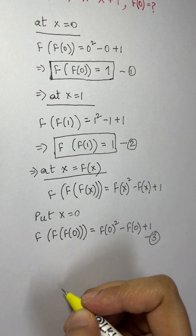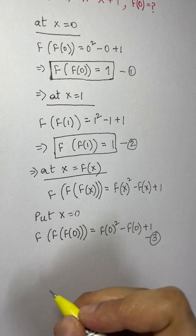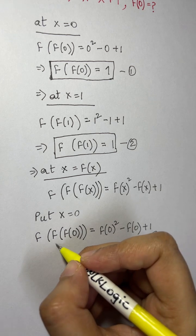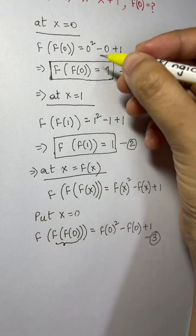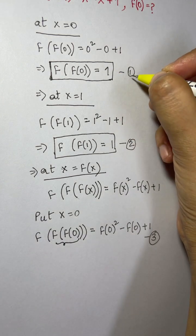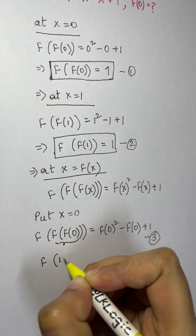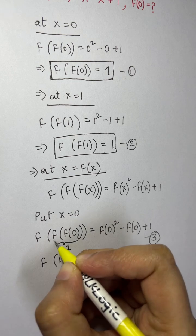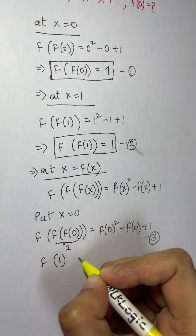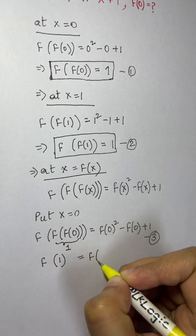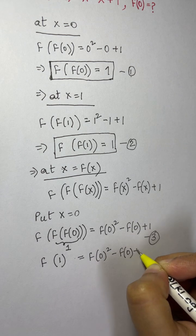This will help us continue solving. From Equation 1, f(f(0)) = 1, so f(f(f(1))) corresponds to f applied to f(f(0)). We substitute to get: f(1) = [f(0)]² - f(0) + 1.